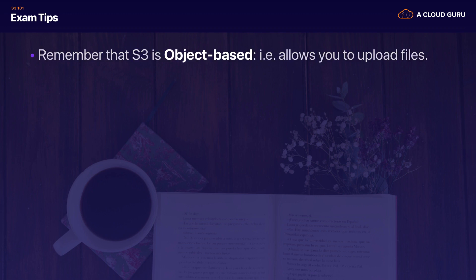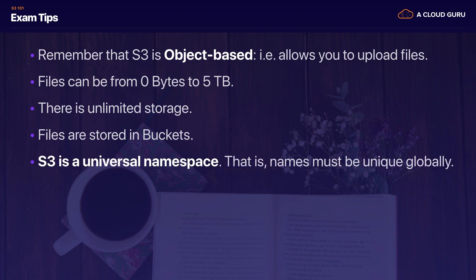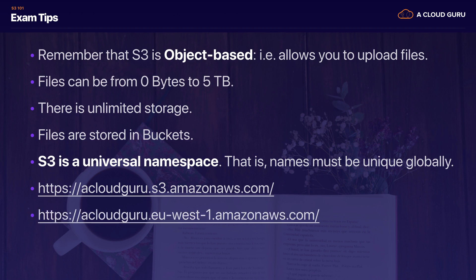Exam tips: S3 is object-based and allows you to upload files from 0 bytes to 5 terabytes. There's unlimited storage and files are stored in buckets — basically just folders in the cloud. S3 is a universal namespace, meaning bucket names must be unique globally. When you create a bucket it creates a DNS name: for example, https://acloudguru.s3.amazonaws.com for Northern Virginia, or with the region name in the subdomain for other regions.